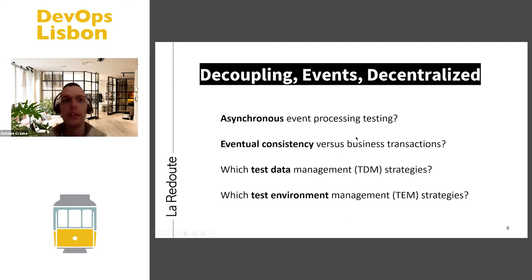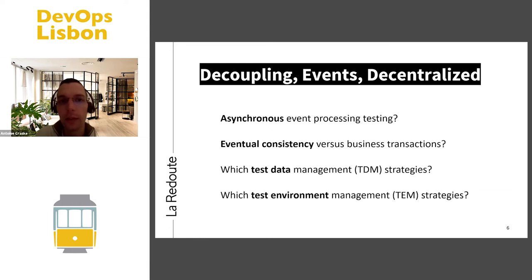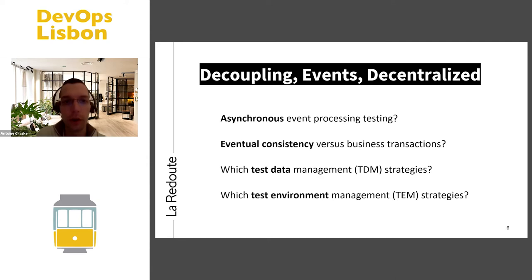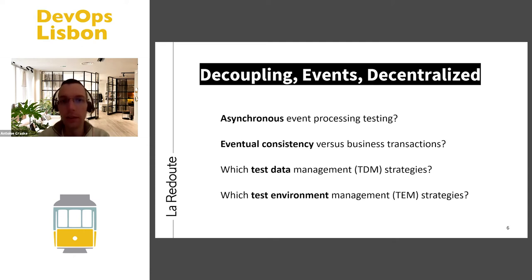When we started to design the big re-harmonization of this IT system in a decentralized and decoupled way, it brought big questions and a different approach to testability from what we were used to. This was really key because we were touching the core of the business — producing parcels, asking the transporter to deliver to our customer, etc. The key question was: how do you test an asynchronous system dealing with eventual consistency? And then the key difficulty in any architecture: management of test data and test environment.